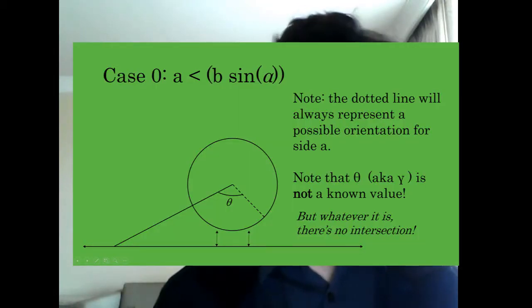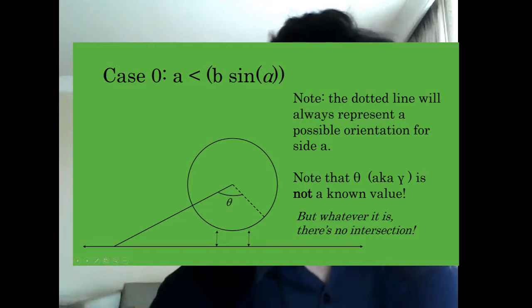Note that you know the value of the side length opposite your given angle, and you should compare this length with the altitude. There are actually three distinct cases to consider. If A — meaning the side opposite the known angle — is less than h, h being the height or the length of the altitude, then no triangle can possibly exist.